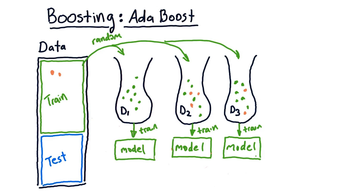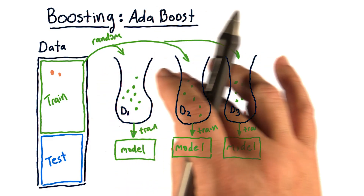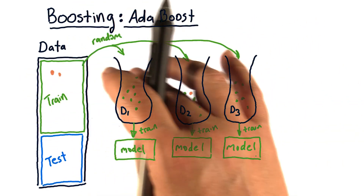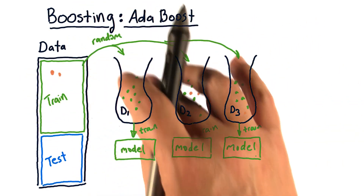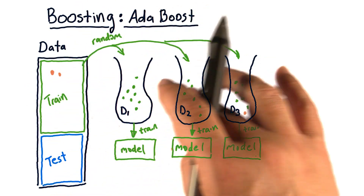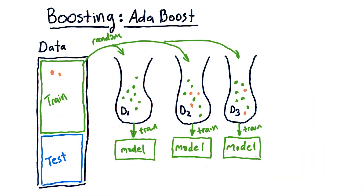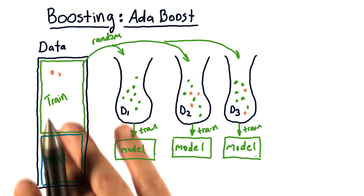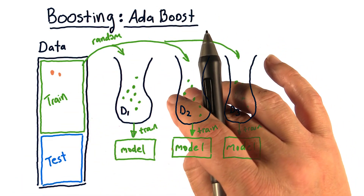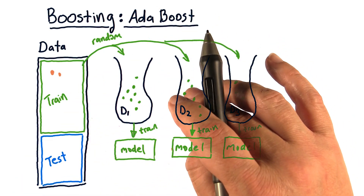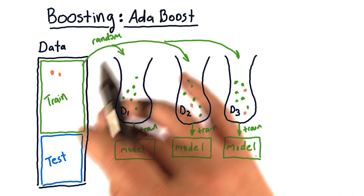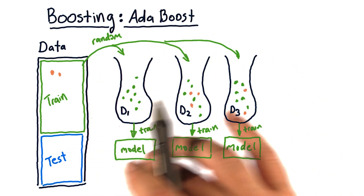To recap: bagging, when we build one of these instances, is simply choosing some subset of the data at random with replacement, and you create each bag in the same way. Boosting is an add-on to this idea where, in subsequent bags, we choose those data instances that had been modeled poorly in the overall system before.